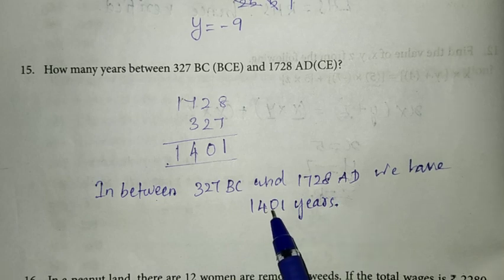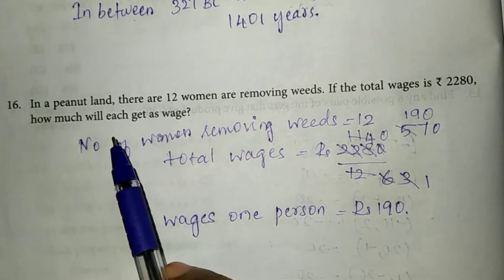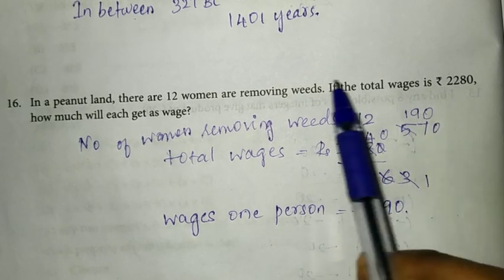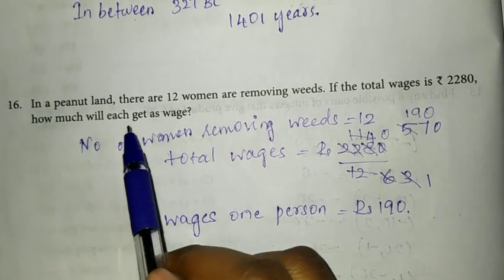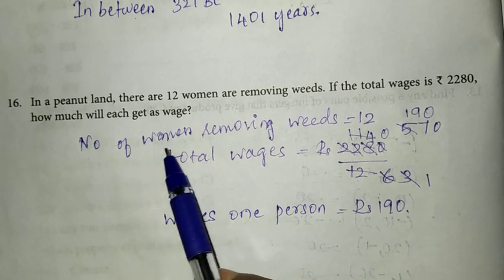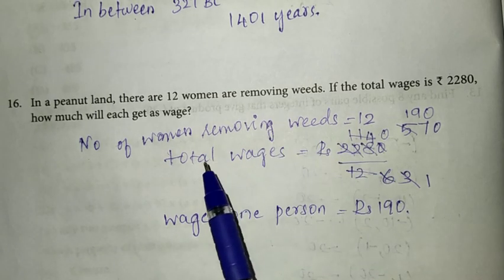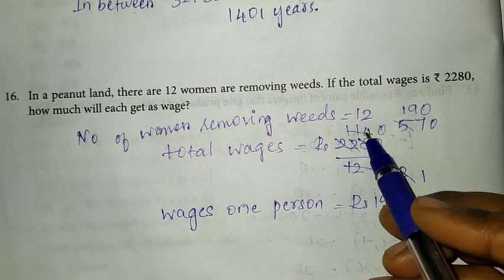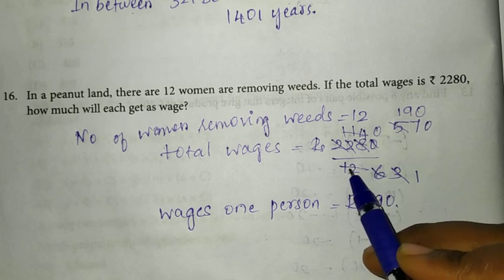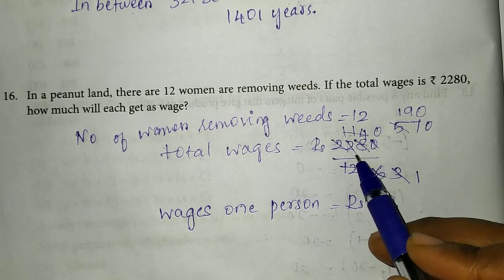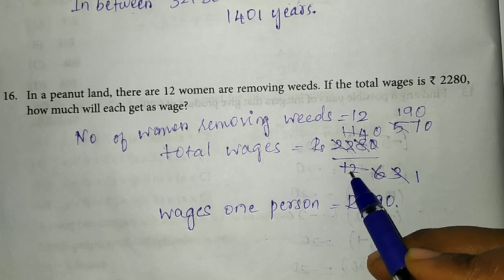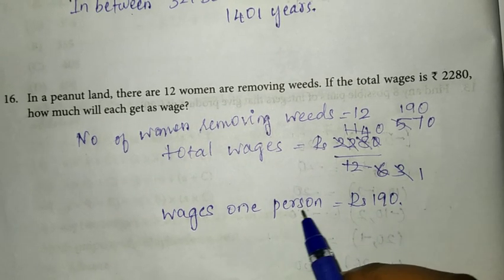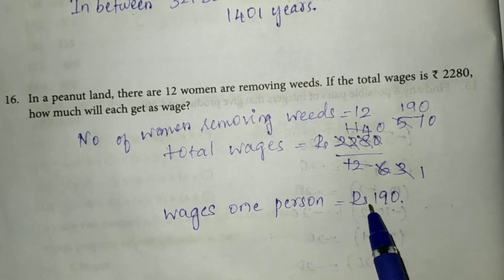Sixteenth question: in a peanut land, there are 12 women removing weeds. If the total wages is Rs. 2280, how much will each get? Number of women equals 12, total wages equals Rs. 2280. Dividing 2280 by 12, we get Rs. 190. So wages for each woman is Rs. 190.